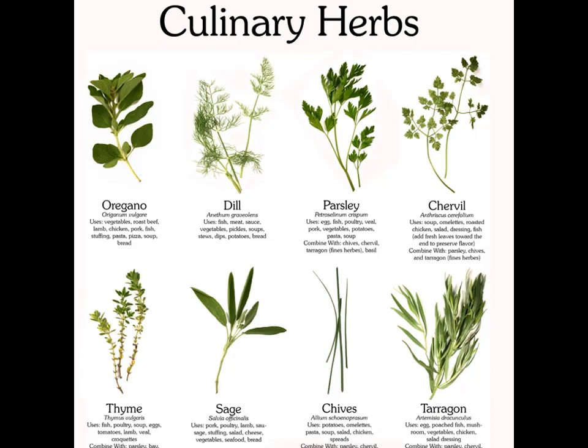Basil, fennel, chives, cilantro, apple mint, thyme, golden oregano, variegated lemon balm, rosemary and variegated sage are some important medicinal herbs and can be planted in a kitchen garden. These herbs are easy to grow, look good, taste and smell amazing, and many of them are magnets for bees and butterflies.